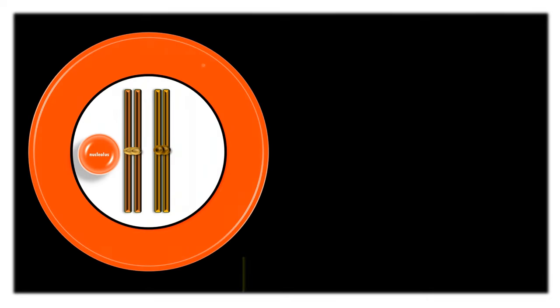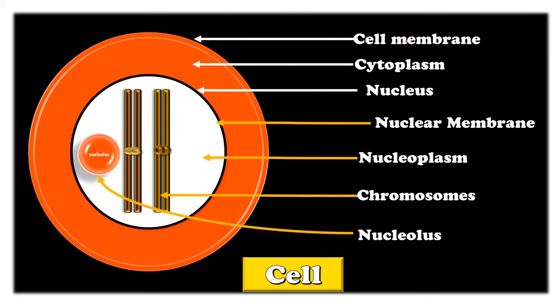Students, the cell consists of an outer covering called cell membrane. The central part of the cell is occupied by nucleus, which is surrounded by cytoplasm. This nucleus shows a covering called nuclear membrane, which encloses the fluid part called nucleoplasm. Genetic material is present in this nucleoplasm. We can also see nucleolus, which is nothing but the factory of ribosomes.